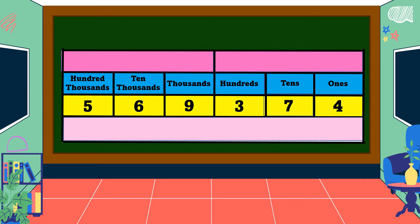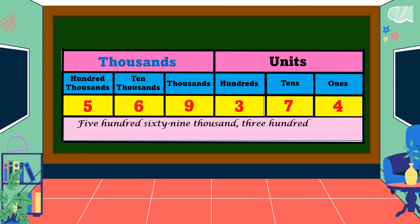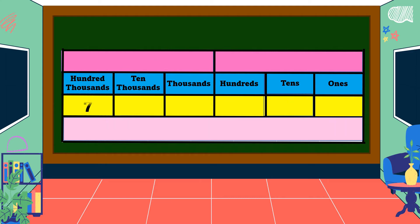Here is our first example. First, we group the digits by periods with a maximum of three digits per period. The period at the right is units, and next to it is thousands. We read the number from the left, as if reading a three-digit number. So we have 569, then we say the thousands period — but omit the 's' in thousands — just 'thousand.' So 569 thousand. Next, we read the units period, which is 374 — don't mention the word 'units.' So in words: 569 thousand, 374.